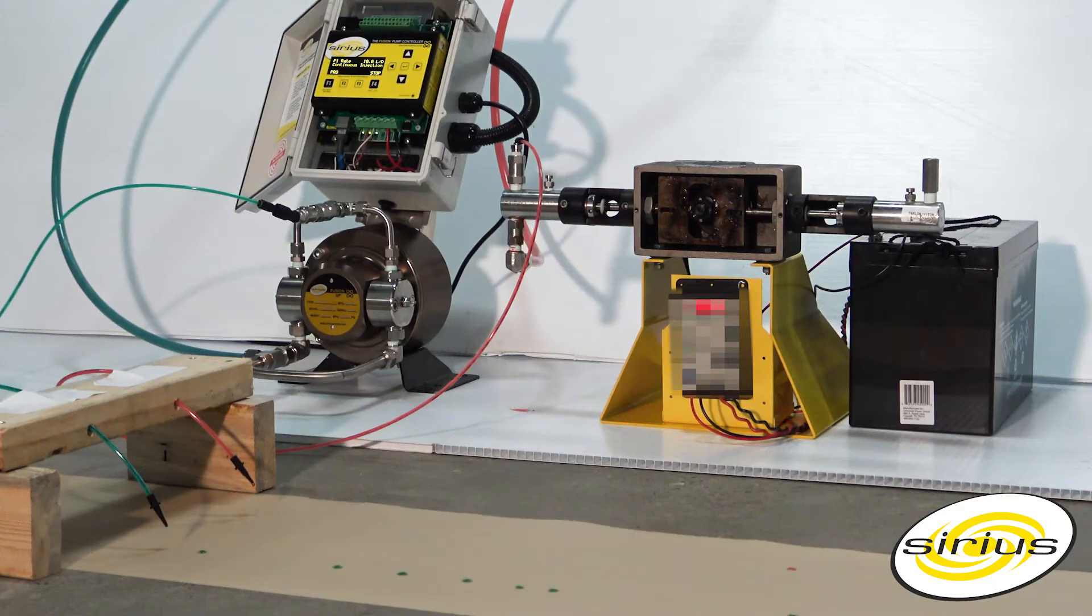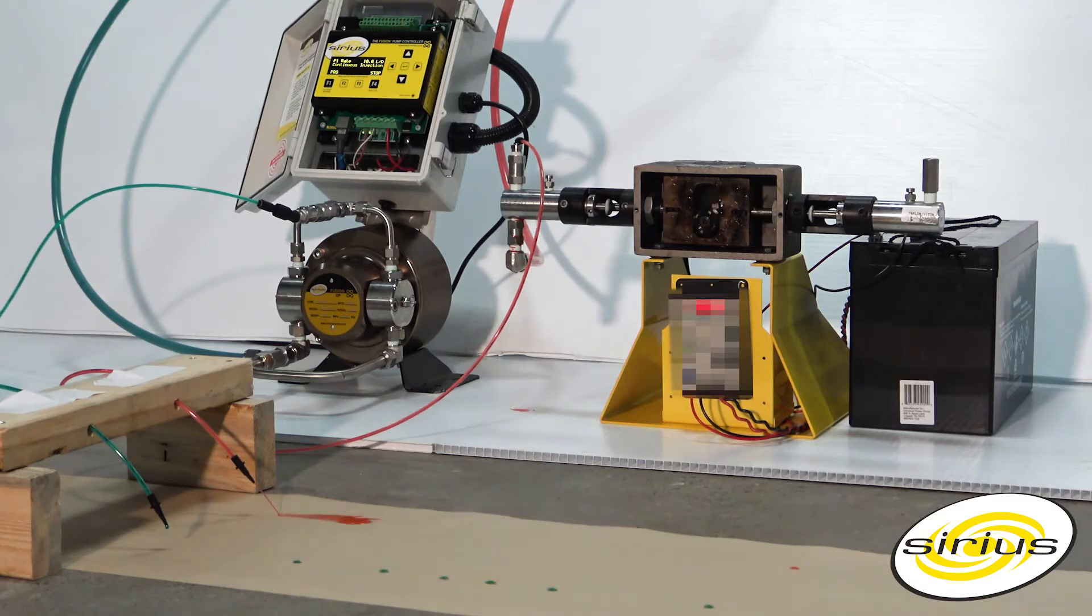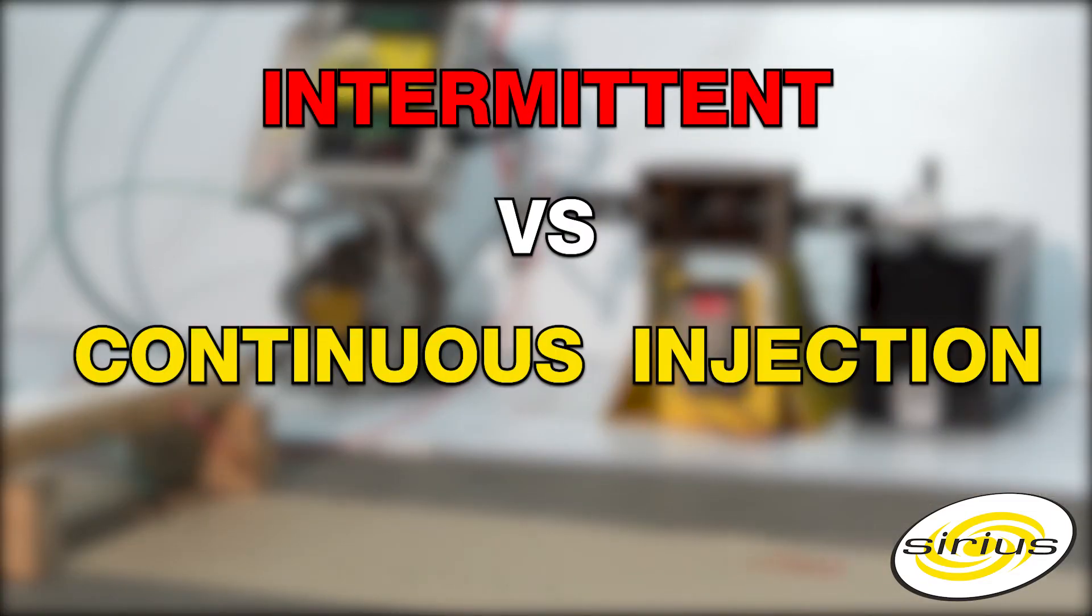Any effective chemical program can be greatly influenced by how the chemical is introduced to a flowing process. This video is an experiment demonstrating the difference between intermittent and continuous injection.